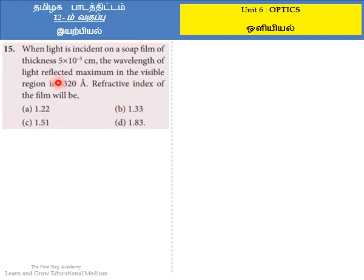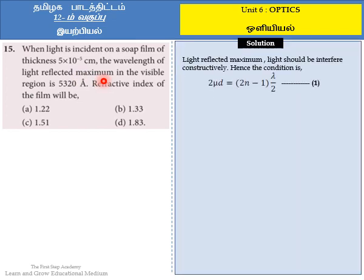They said that the light reflected maximum in the visible region. To reflect light at maximum, the condition is that light should interfere constructively. The condition can be expressed as 2μD = (2n−1) × λ/2. This I have taken as expression 1.